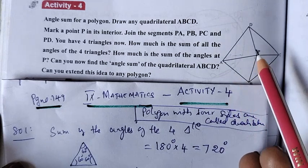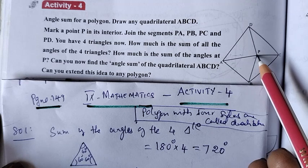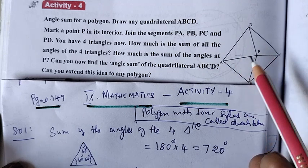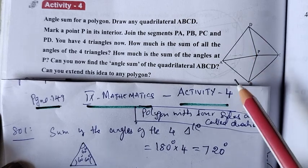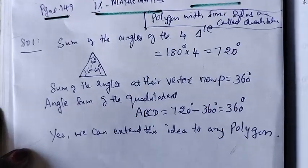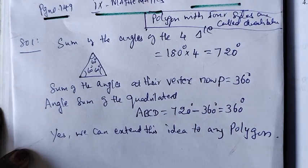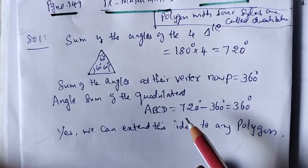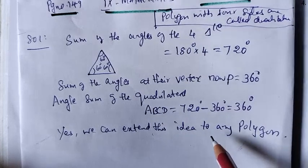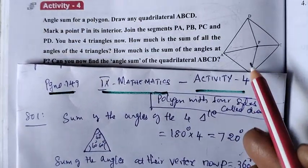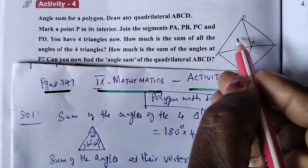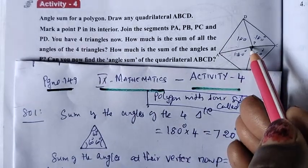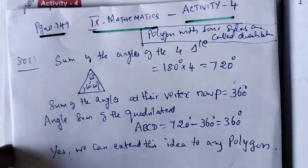The sum of the angles of the four triangles is 180 into 4, which equals 720 degrees. The sum of the angles at the vertex is 360 degrees. So the angle sum of the quadrilateral is 720 degrees minus the vertex 360 degrees, which equals 360 degrees.